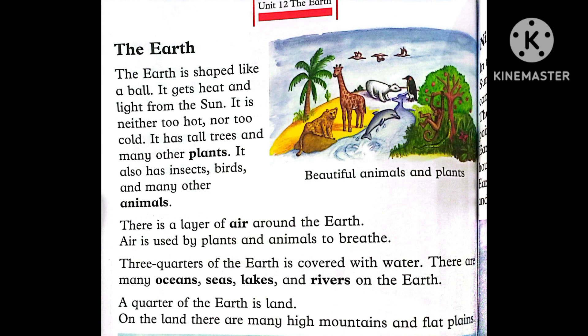The Earth is shaped like a ball. It has many plants and many other species. It also has insects, birds, and many other animals. As you can see in the picture, there are beautiful animals, plants, and birds.